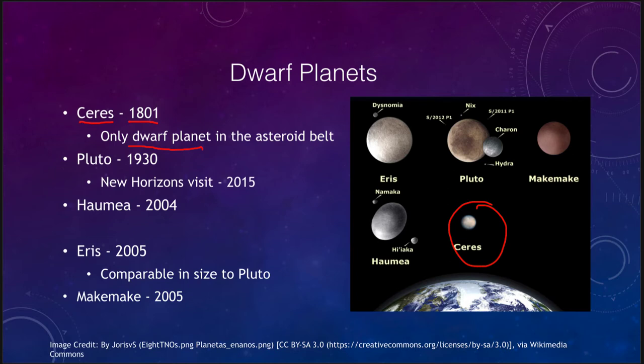Ceres, when it was discovered in 1801, was thought it might be a new planet between Mars and Jupiter. Pluto was the next dwarf planet discovered, in 1930, after an exhaustive search prompted by the belief that Neptune's orbit was deviating due to the gravitational influence of another large object.